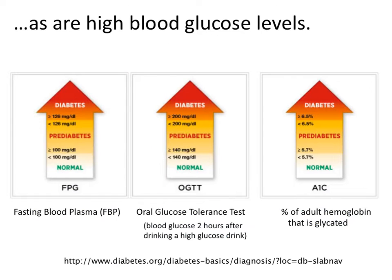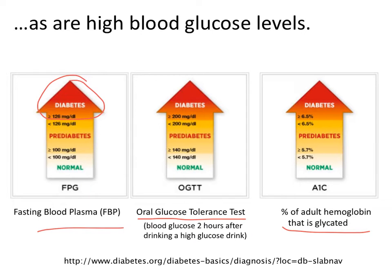Blood glucose levels that are too high are also dangerous, and we call this diabetes mellitus, or just diabetes. This image shows three different ways of measuring blood glucose levels to diagnose diabetes: either fasting blood glucose, an oral glucose tolerance test, or the percent HbA1c, or glycated hemoglobin in the blood. And these images show the levels from each test by which we define diabetes.